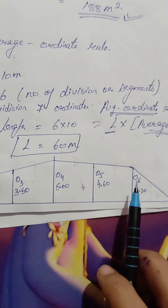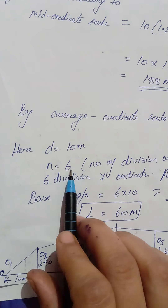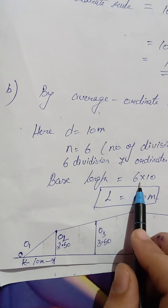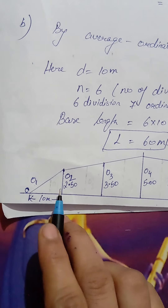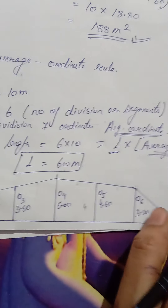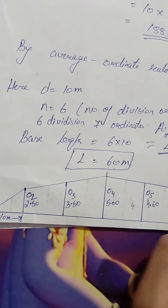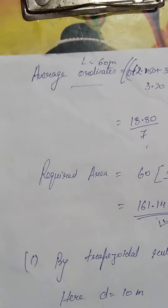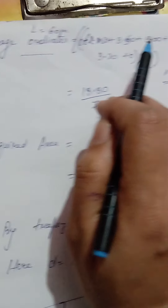So 10 into the sum of all mid ordinates, which is 18.80, gives 188 square meters. This is the total area from the mid ordinate rule. Now let's go to the next method: the average ordinate rule. For average ordinate, we first need the formula for total area.